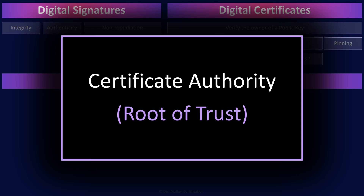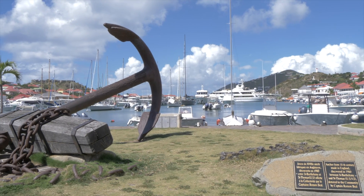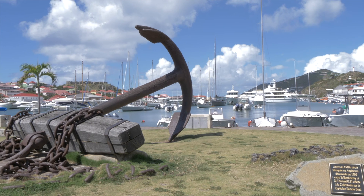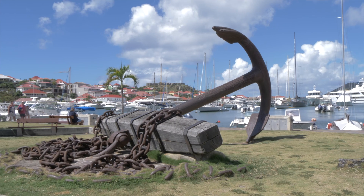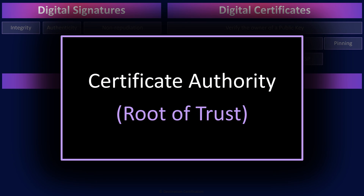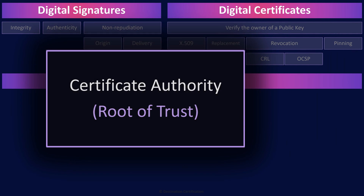The CA uses its private key to encrypt some data — including the name of the owner and their public key — to create a digital certificate. Because the CA is the only entity in the world that has their private key, no one can modify the certificate the CA creates or create spoofed certificates that look like they came from the CA but didn't. And anyone can decrypt a digital certificate created by one of the big public CAs because everyone has their public key — pre-installed in browsers like Firefox, Chrome, Safari, and even in our operating systems.